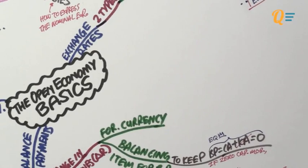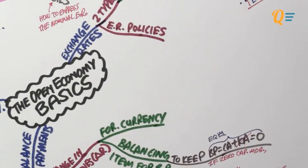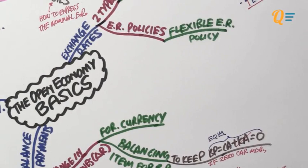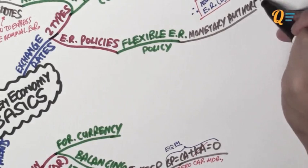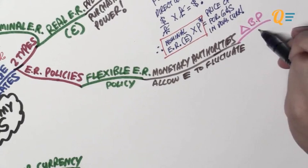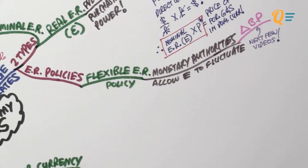For the last sub-branch, we're going to be talking about exchange rate policies. There are two types for introduction to economics. The first one would be a flexible exchange rate policy, also known as a floating exchange rate policy. When the central bank adopts a flexible exchange rate policy, they are actually allowing the nominal exchange rate to fluctuate according to any change in the balance of payment. In proper terms, your currencies are either going to appreciate or depreciate.